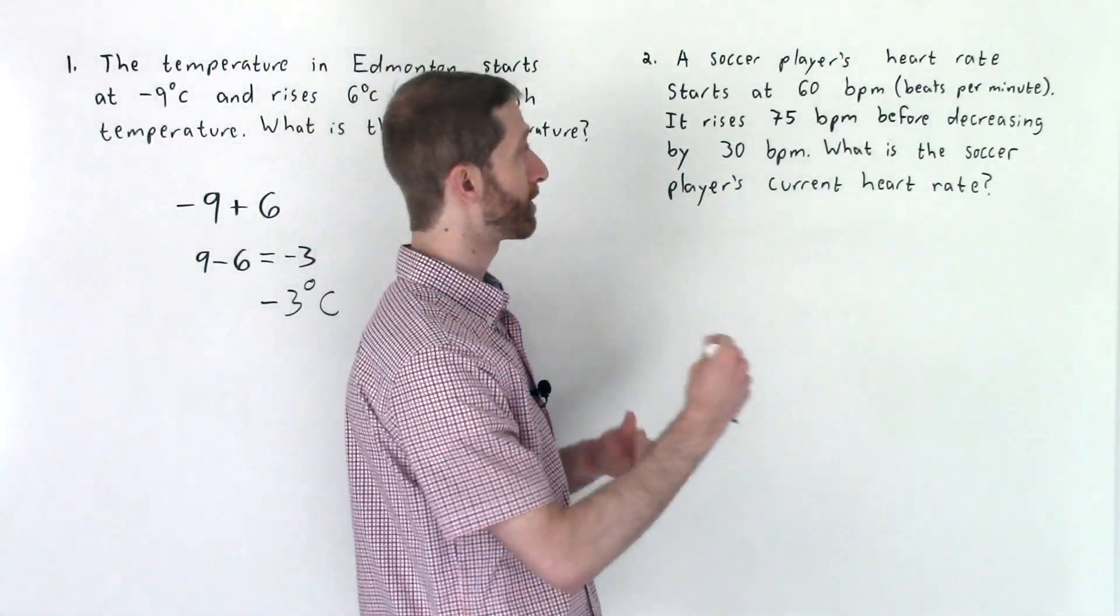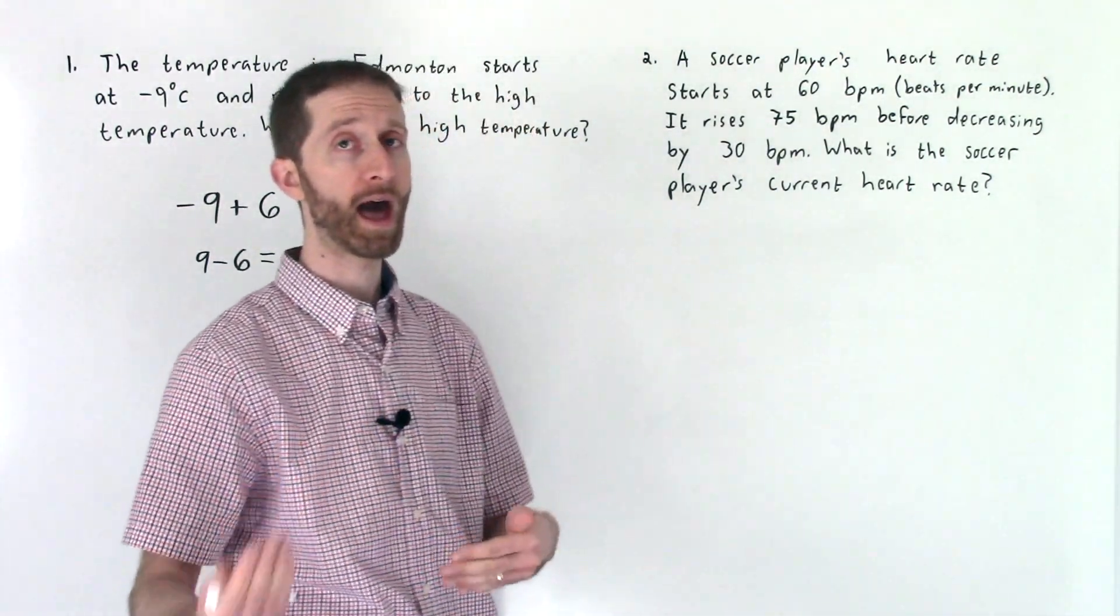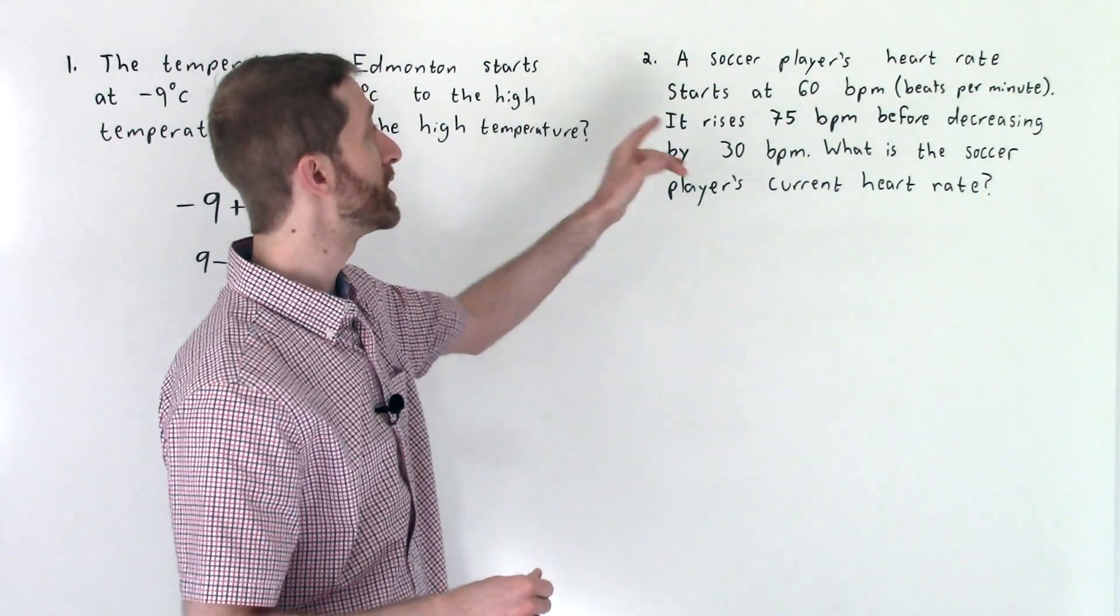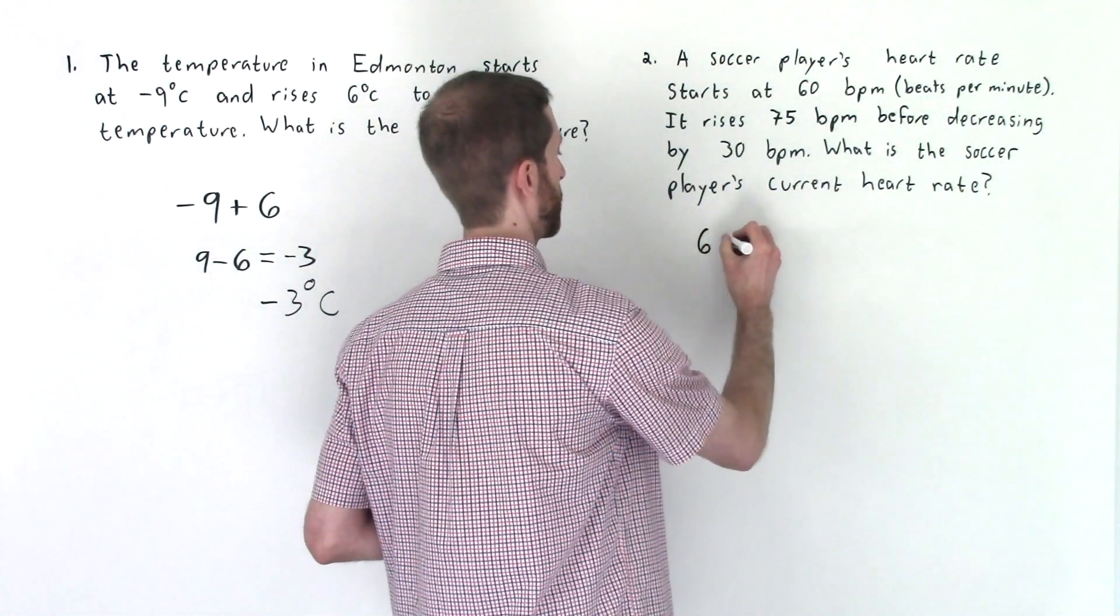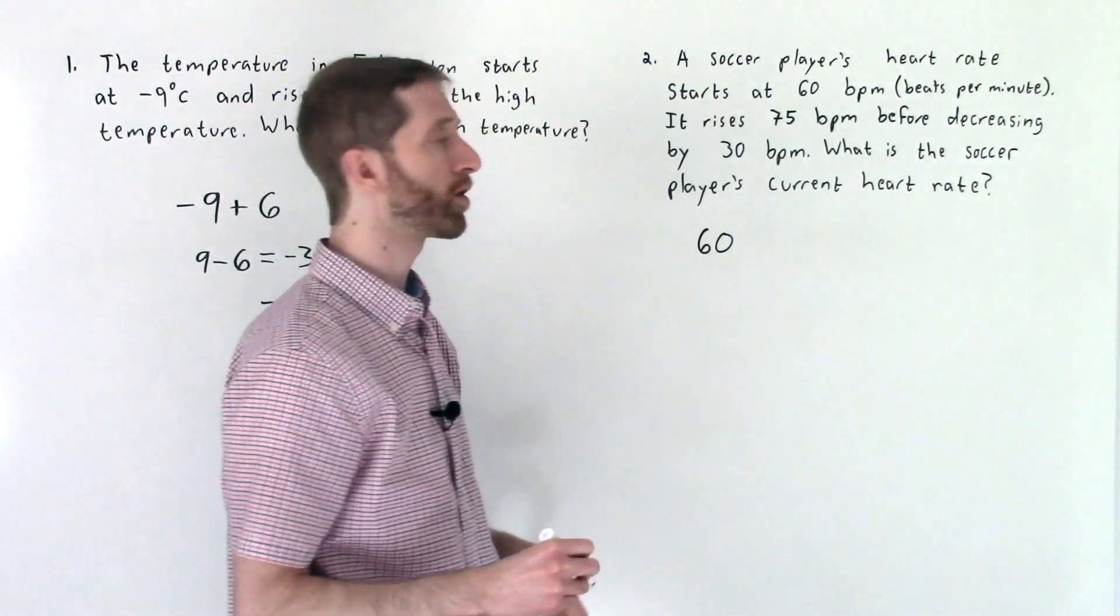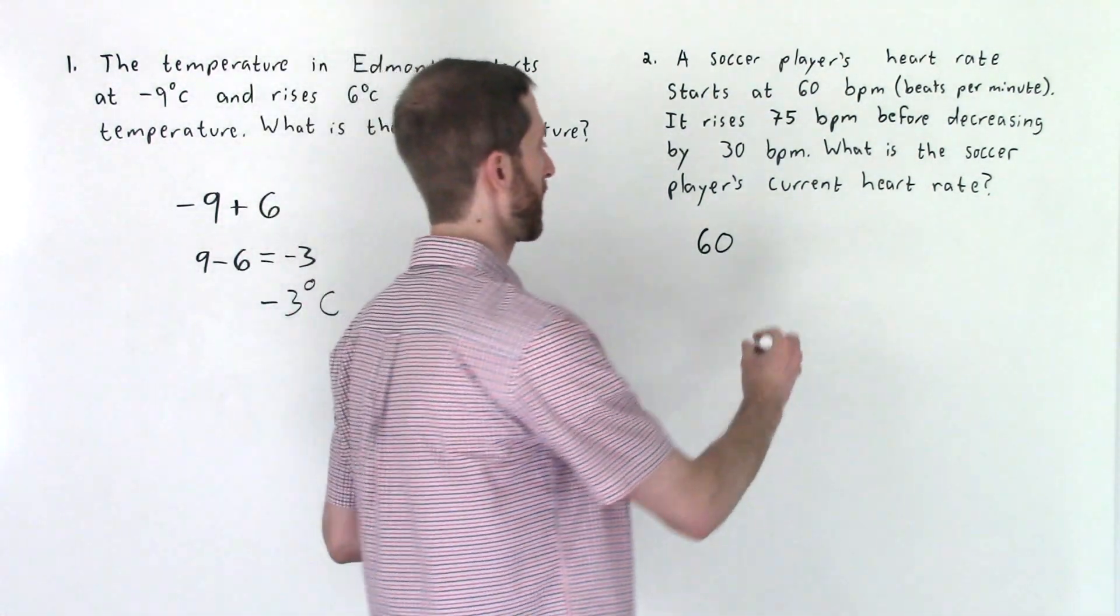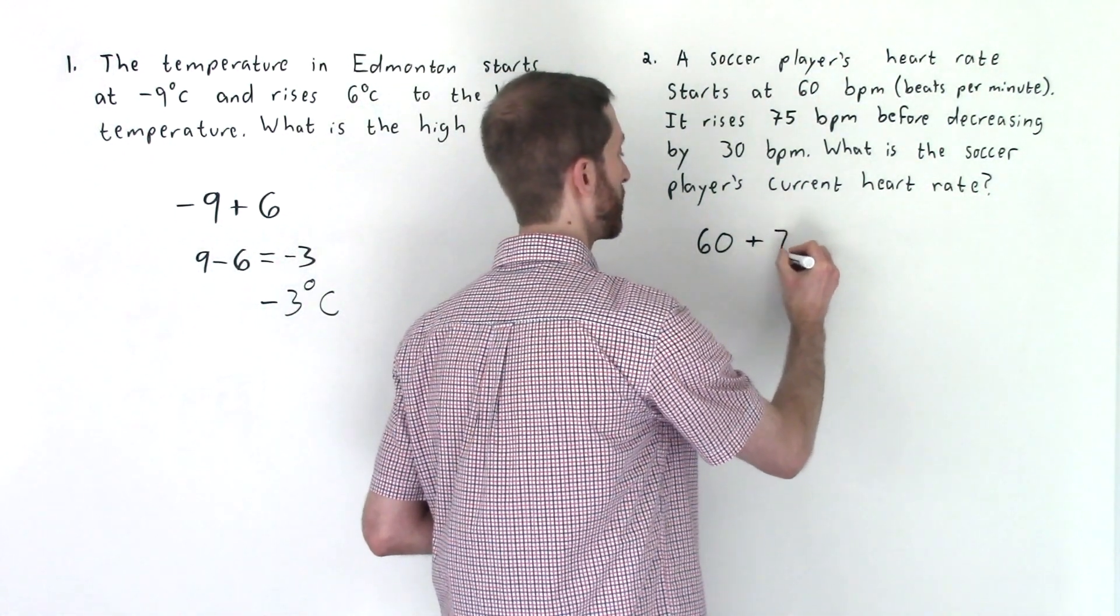Okay. So this problem is about following along and translating what we have as we go. So we start at 60 BPM. So we're going to start there. It then says that the heart rate rises by 75. So I'm going to add 75 BPM.